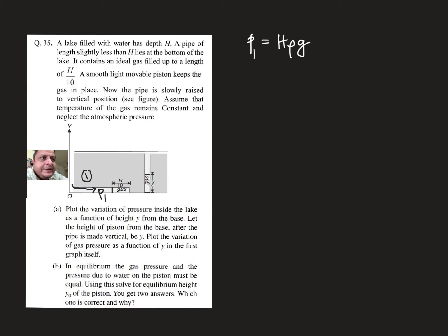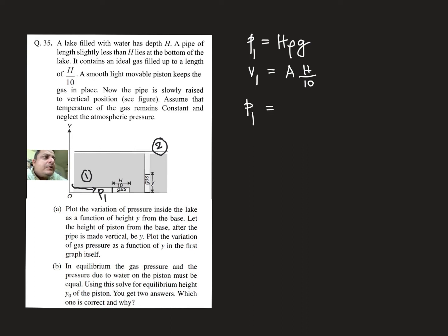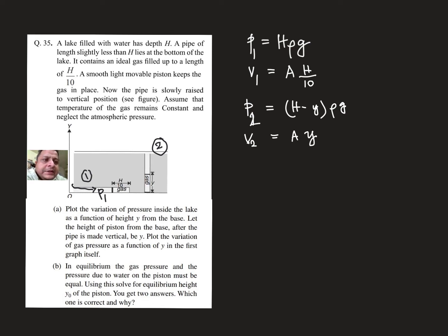Since temperature remains constant, we can apply Boyle's law. In the first stage, let the cross-section of the pipe be A, so the volume V1 equals A times h/10. In the final stage, stage two, the pressure p2 equals (h minus y)·ρ·g, and the final volume V2 equals A times y.